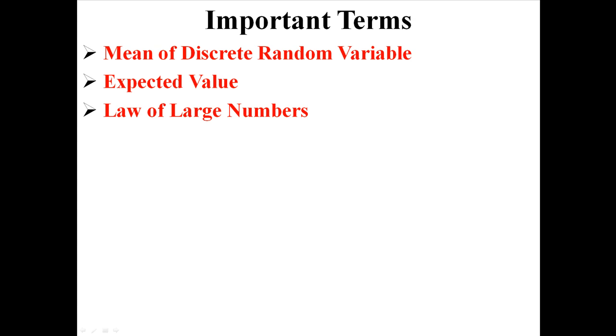And it's pretty simple. That's how you calculate the mean of a discrete random variable. Just understand that what we're actually calculating is an expected value for our probability experiment, and it will approach that value due to what we call the law of large numbers.